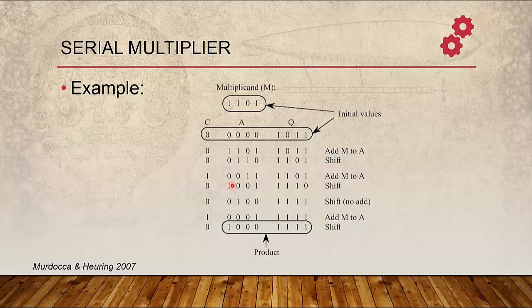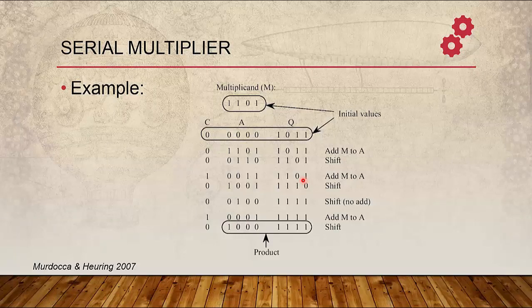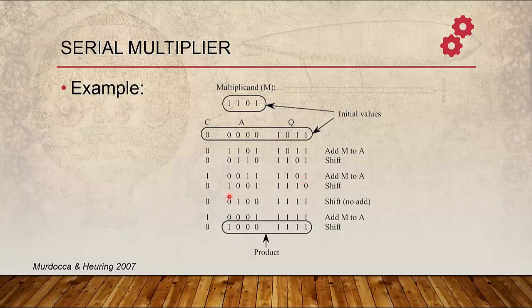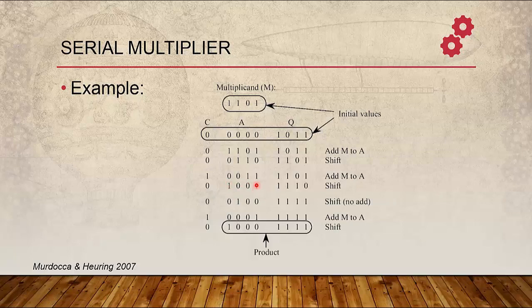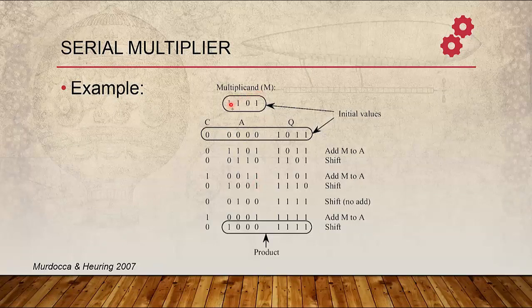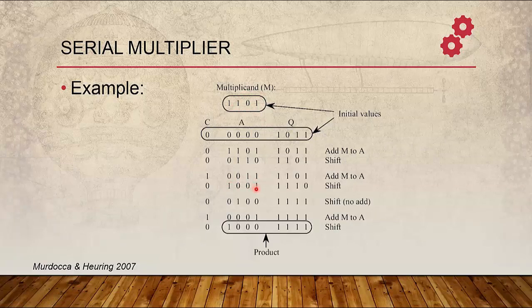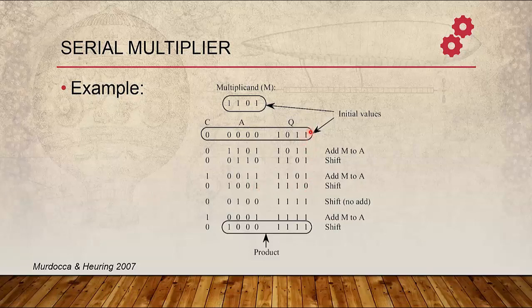Then for the next iteration, again we look at the value of LSB of Q. Now it is 0. Since it is 0, we don't have to add Multiplicand to A. We just shift. So shifting is done every time or in every iteration. But addition of Multiplicand from M to A is done only if the LSB of Q was 1 in the previous iteration.